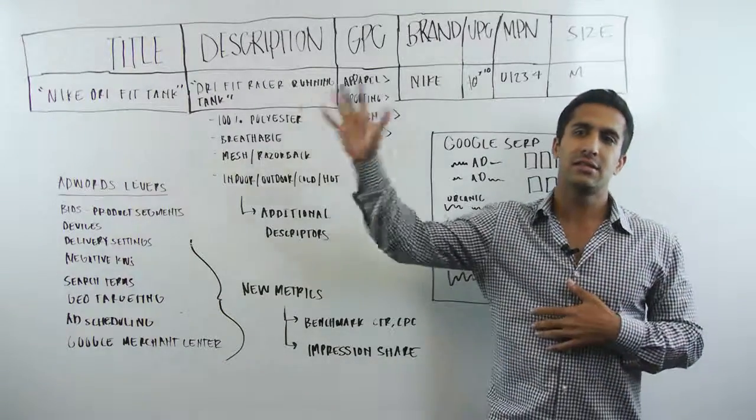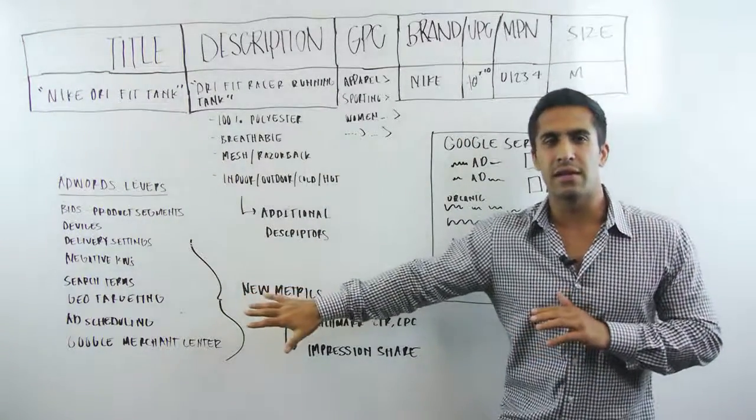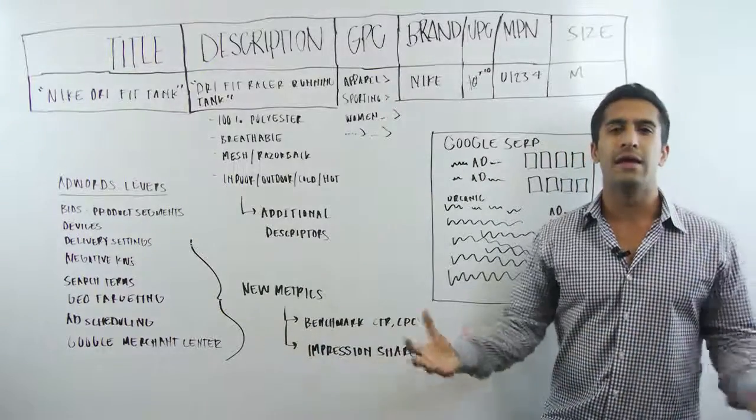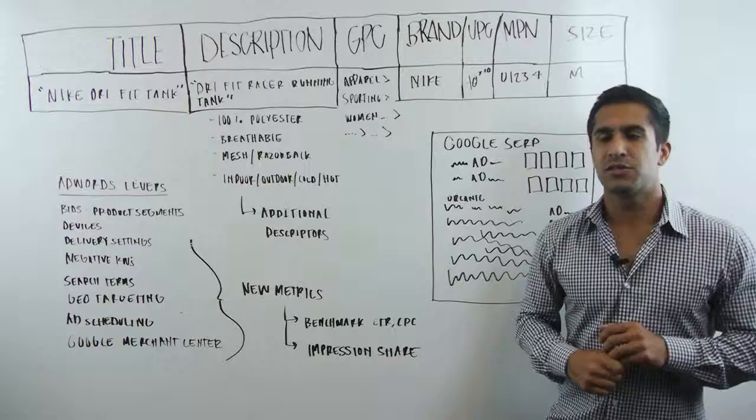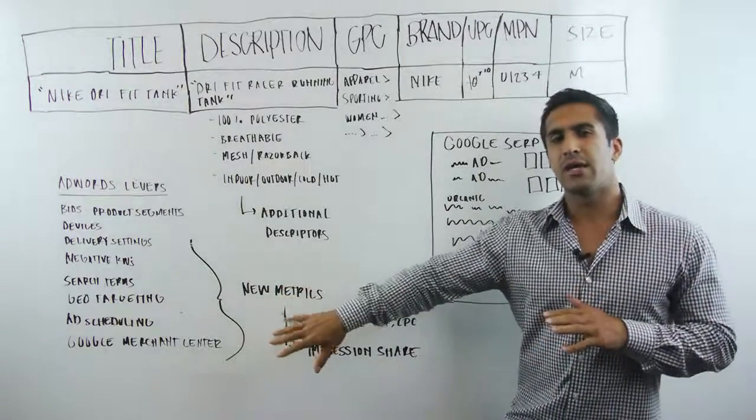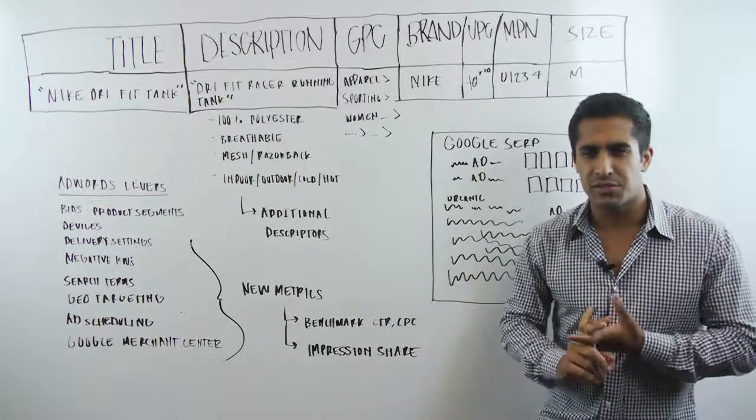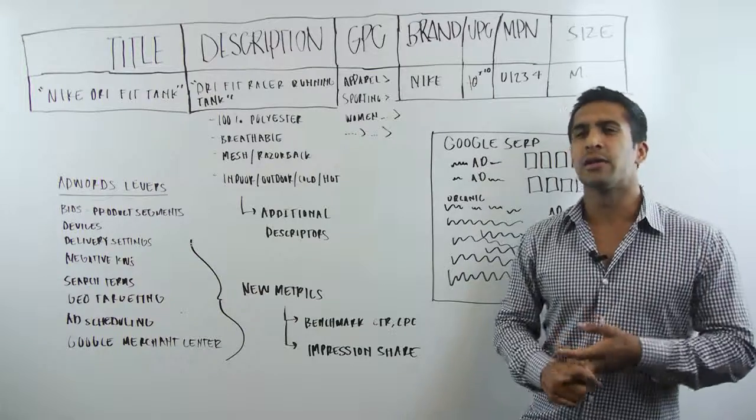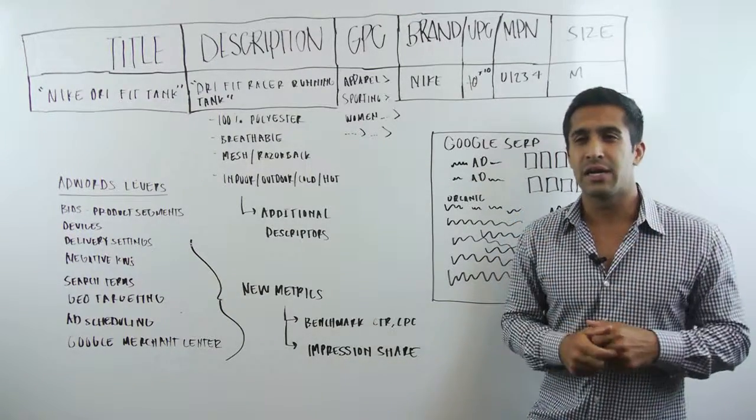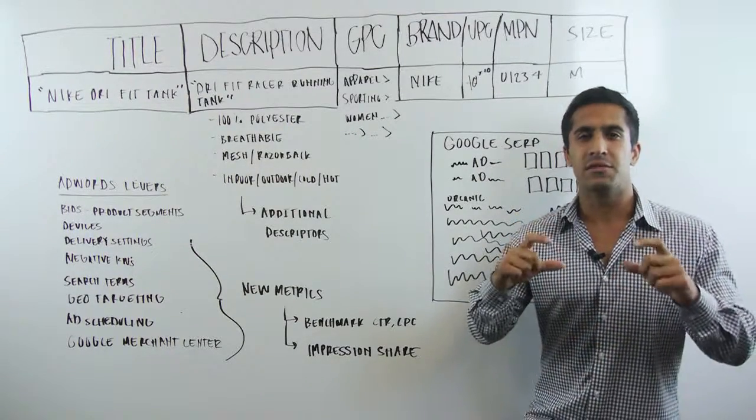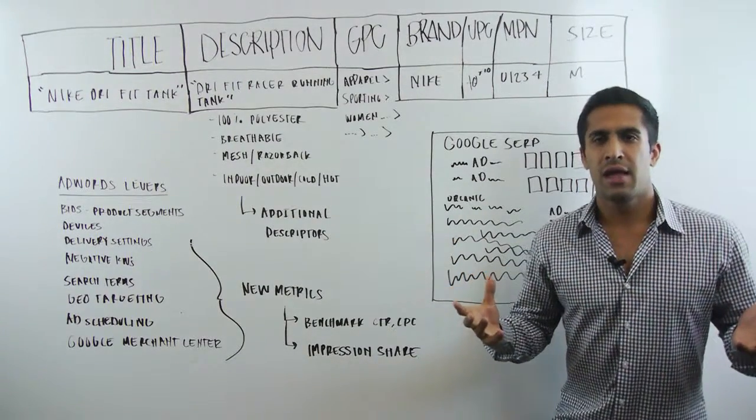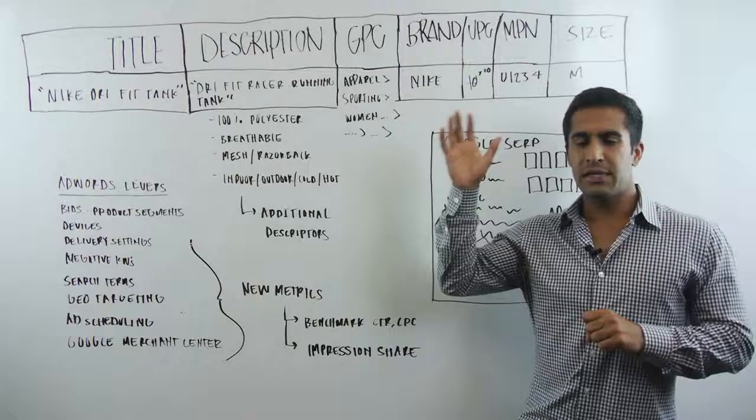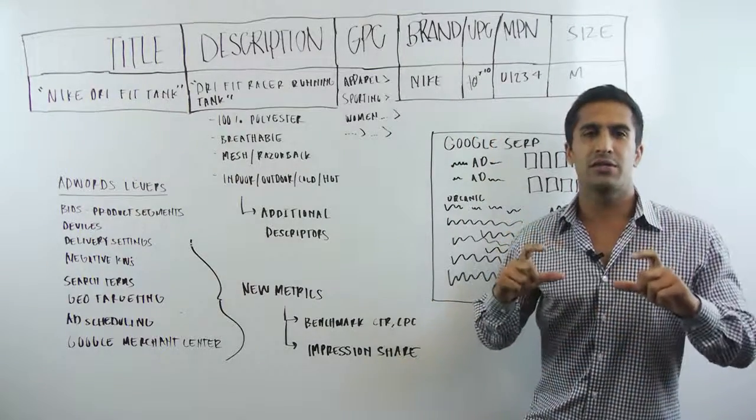Say you've maxed everything out that you possibly can here. You've absorbed all the data that you can. But still, you're looking for more impressions. Based on these optimal settings, based on the best states that you're targeting, the devices that you're targeting, the best product segments that you have, you have a base level of impressions. Let's call it a million impressions. And no matter what you do, based on the feed you're submitting, a million impressions is what you can get.